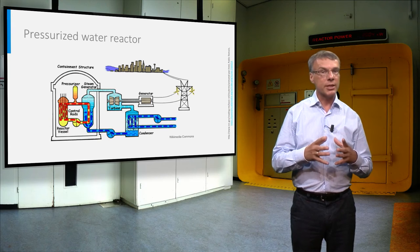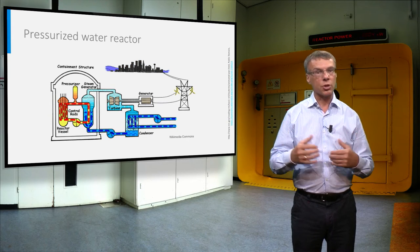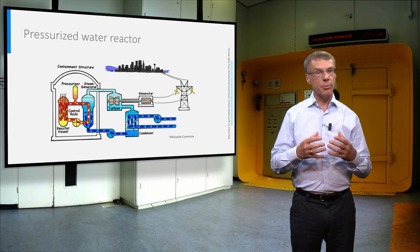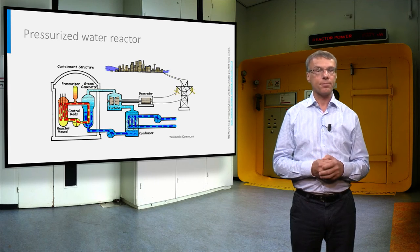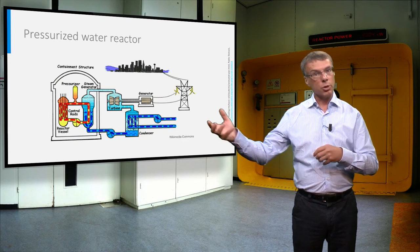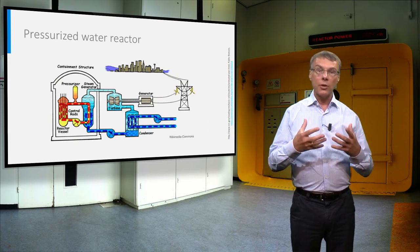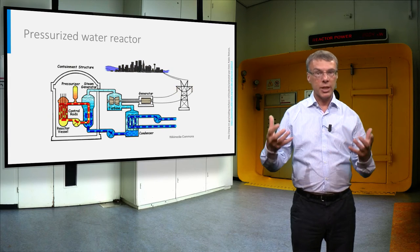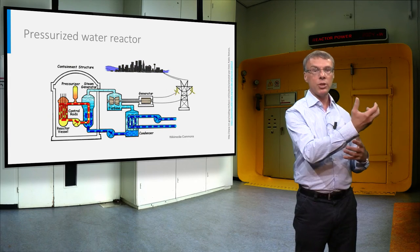The heat is transferred to a secondary loop with lower pressure, leading to the formation of steam that drives the turbine. A generator connected to the shaft of the turbine produces electricity. After expansion, the steam is condensed to water and pumped back to the steam generator.